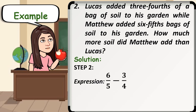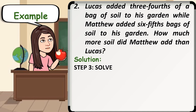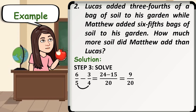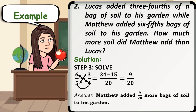For step number 2, we will derive an expression based from the given. Since we are talking about how much more soil did Matthew add than Lucas, we will be getting the difference: 6 fifths for Matthew minus 3 fourths for Lucas. Step number 3: since we are dealing with subtracting fractions, we use the butterfly method. We multiply 5 and 4 to get our common denominator, which is 20. Taking the diagonals: 6 times 4 is 24, and 3 times 5 is 15. So we have 24 minus 15 over 20, giving us 9 over 20. Matthew added 9 over 20 more bags of soil to his garden.